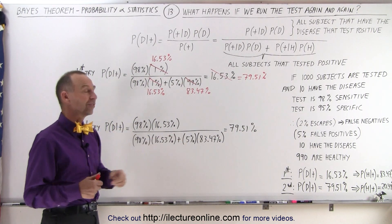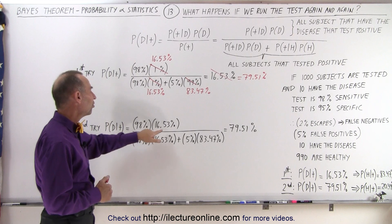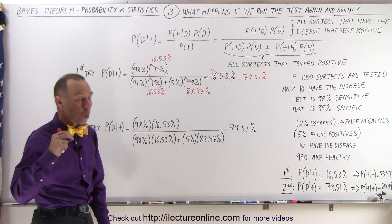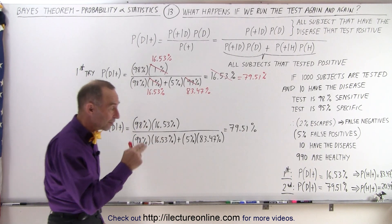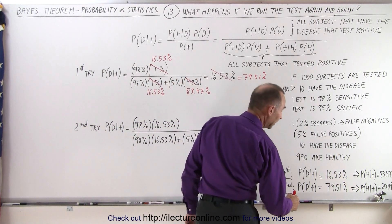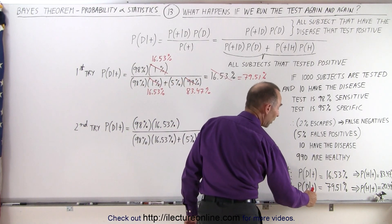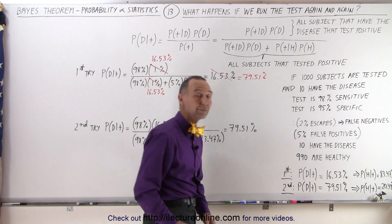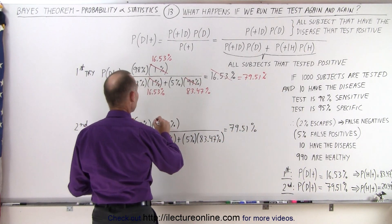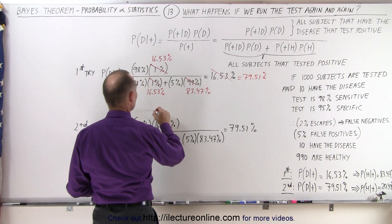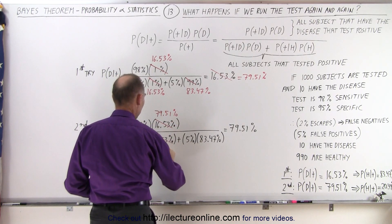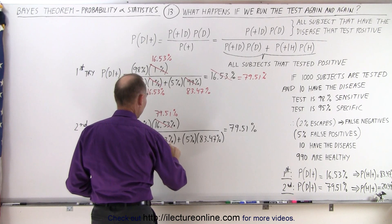So the 98% and the 5% stay the same. What changes is the 16.53%, because now, since you're only testing those that have tested positive twice, the probability that if they test positive they have the condition you're looking for is now up to 79.51%. So this now changes to 79.51%, and this also changes to 79.51%.